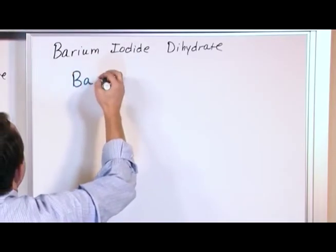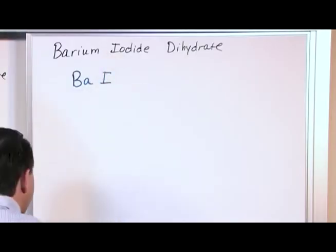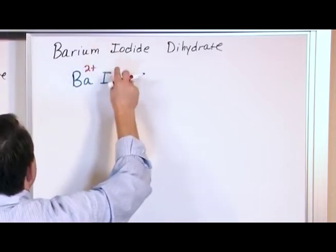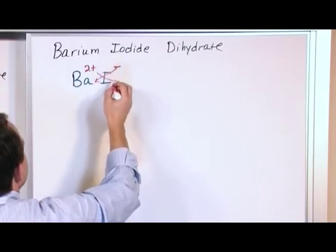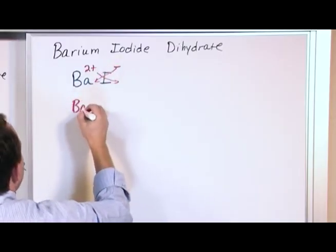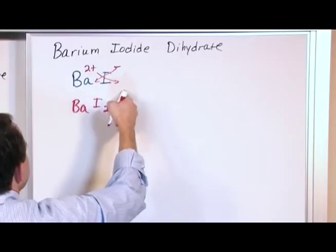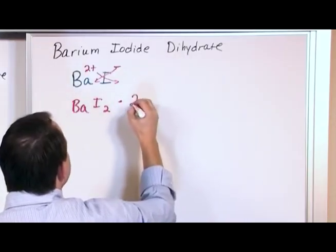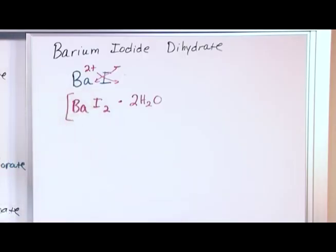First we have to do this part, the ionic part. So we do the Ba for barium, the iodine for the iodine. What is the charge on barium? Barium likes to take plus two charge. What is the charge on iodine? It likes to have a negative one charge. So we just do crisscross. So we get Ba1 from here, I2 from here. Dihydrate - di means 2, so it's 2H2O. So BaI2·2H2O.